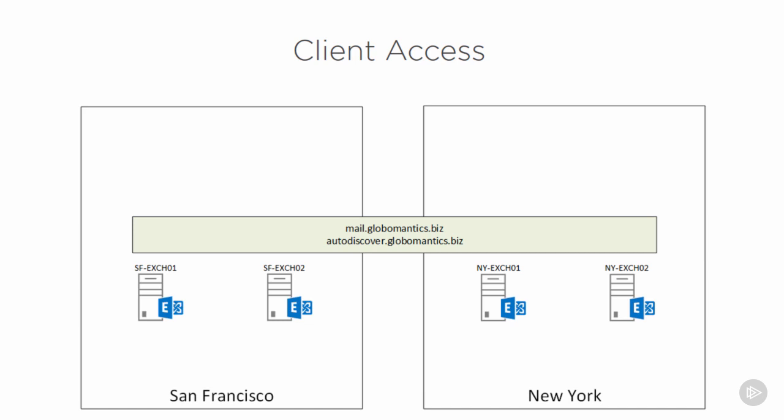For client access, we looked at deploying an unbound namespace that could resolve to the Exchange servers using DNS round robin or load balancing, and how Exchange front end services would proxy connections to whichever server hosted the mailbox at the time, making them all work together in a cooperative and resilient manner, even if one or more of the servers were actually down.